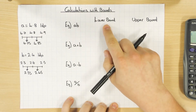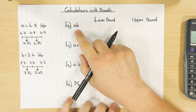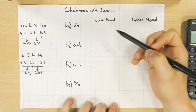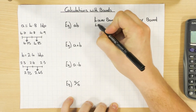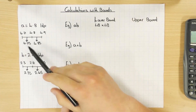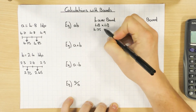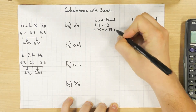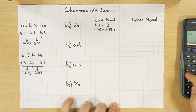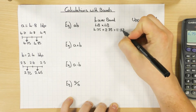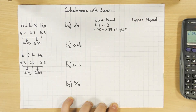Starting with multiplication — for the lower bound of a × b, you want the lowest possible value, which is simply lower bound times lower bound. That's 4.75 times 2.35. Using a calculator: 4.75 × 2.35 = 11.1625. That's the absolute minimum value you can get when multiplying the two numbers together.